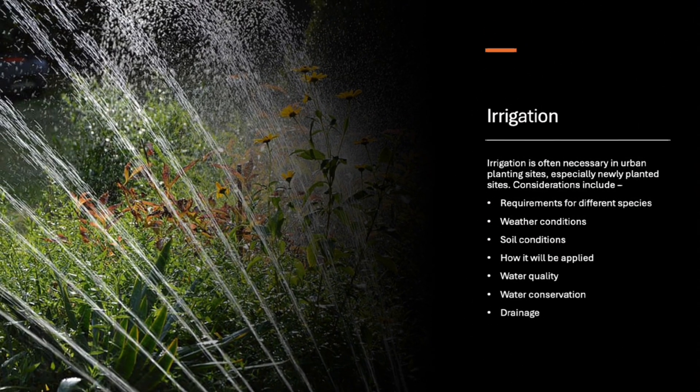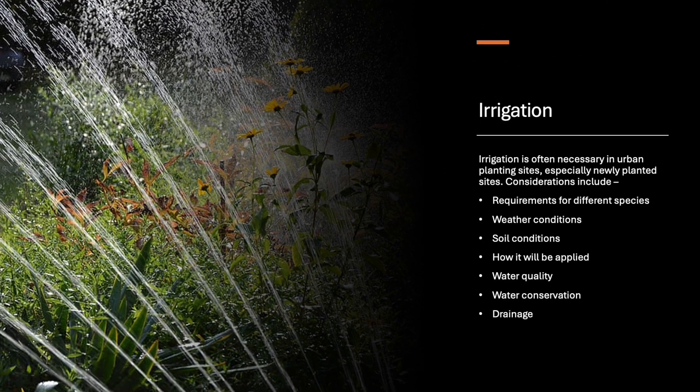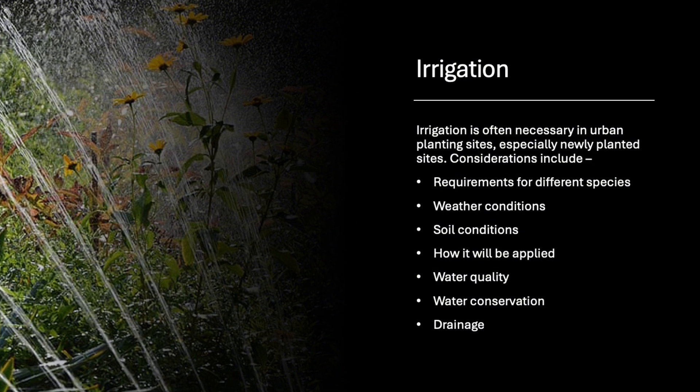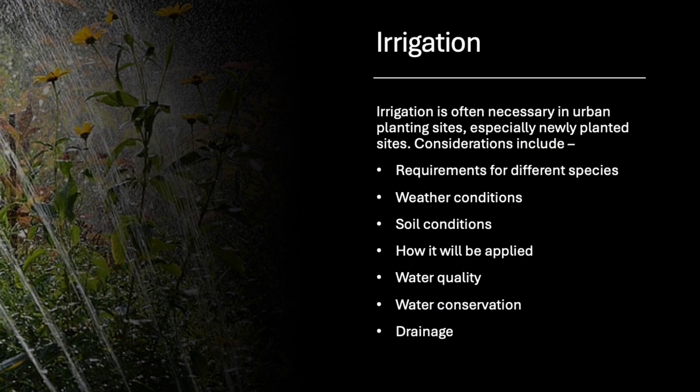Irrigation is often necessary, especially in urban planting sites and for newly planted trees. When setting up an irrigation program, we need to consider several factors: the species of the tree, since different trees have different water needs; weather conditions like drought or excessive rain; soil conditions and how water is applied; and even water quality and conservation measures.